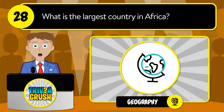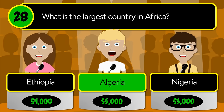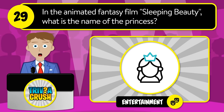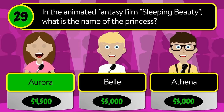Question number twenty-eight: what is the largest country in Africa? Is it Ethiopia, Algeria, or Nigeria? The correct answer is Algeria. Question number twenty-nine: in the animated fantasy film Sleeping Beauty, what is the name of the princess? Is it Aurora, Belle, or Athena? The correct answer is Aurora.